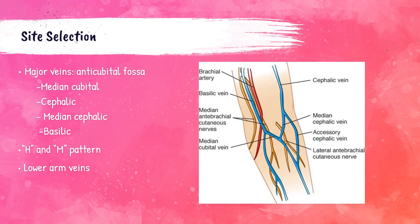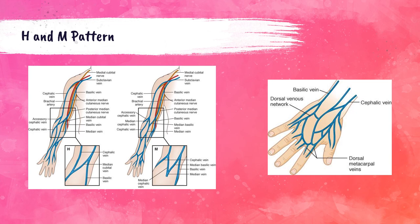When selecting a vein, the phlebotomist feels for the major veins of the antecubital fossa. The median cubital vein is between the other two and is the best option for venipuncture. The cephalic vein is the most lateral, and the basilic vein is the most medial — remember 'B for basilic, B for body' to recall it is nearest the body. These veins form an H or M pattern on some people. Veins on the lower arm may also be options, and the dorsal side of the hand can be used if no antecubital vein is accessible.